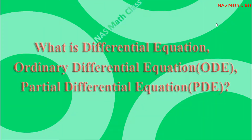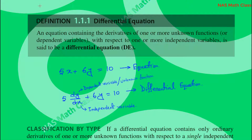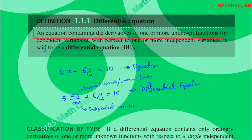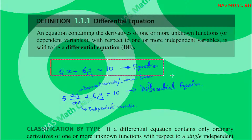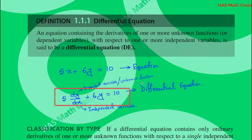We will look at what a differential equation is, and what ordinary differential equations and partial differential equations are. An equation containing the derivatives of one or more unknown functions, or dependent variables, with respect to one or more independent variables, is called a differential equation. When an equation contains derivatives like dy/dx, where y is differentiated with respect to x, that equation is called a differential equation.